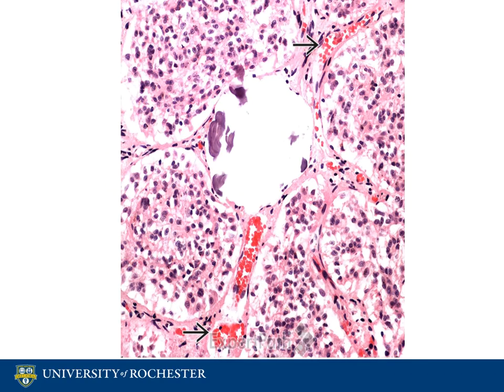The pineal gland is arranged into several lobes which are separated by connective tissue. This allows for blood vessels to pass through the gland. Lobes communicate with each other through nerve fibers that connect them.